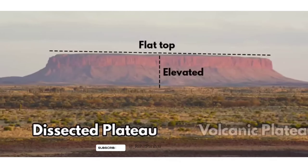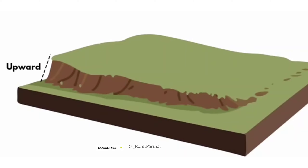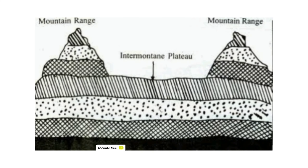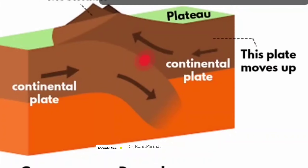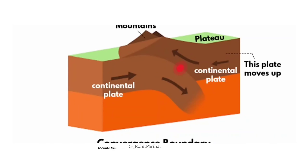On screen, you can see the Dissected Plateaus. These are formed due to the upward movement of the earth's crust. One side of this plateau has a slope. Mountains are similar to plateaus, but plateaus have flat tops. Dissected Plateaus are formed due to the slow collision of tectonic plates.